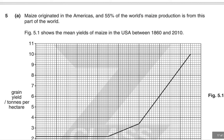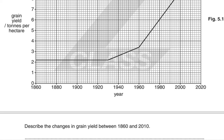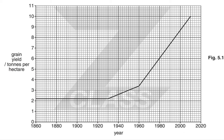Question 5. Maize originated in the Americas and 55% of the world's maize production is from this part of the world. Figure 5.1 shows mean yields of maize in the USA between 1860 and 2010. There was no change between 1860 and 1930, at 2.2 tonnes per hectare. Then there was a slower increase from 1930 to 1960, up to 3.4 tonnes per hectare. From 1960 to 2010, there was a much greater increase, reaching 10 tonnes per hectare by 2010.